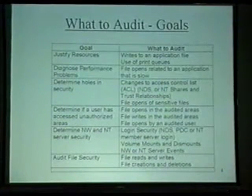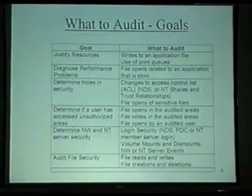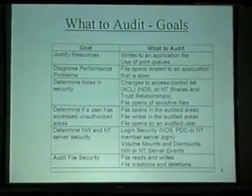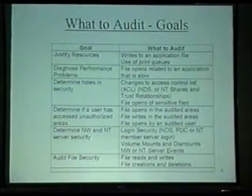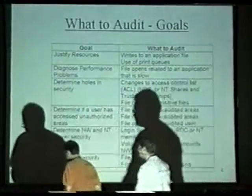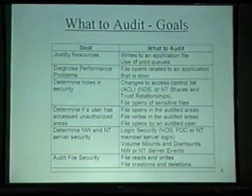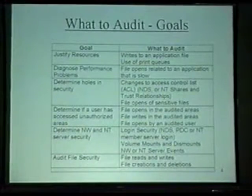On this slide we're going to look at audit goals and cross-reference them to what you want to look at. If you want to justify resources, you want to look at rights to an application, write events to an application, or the use of print queues. To diagnose performance problems, you want to look at file opens related to an application that is slow.